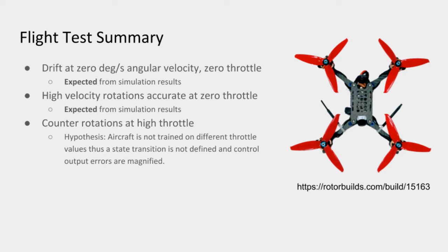Additionally, we found that high velocity rotations performed at zero throttle — for example, this would be equivalent to what you'd see in air mode — were quite accurate, and this was also expected from our simulation results. However, the counter rotations that occur at high throttle: although we seem to be able to explain this behavior, our current hypothesis is that the aircraft is not trained on different throttle values, and thus the state transitions by the neural network can't be defined, and control output errors are thus magnified.